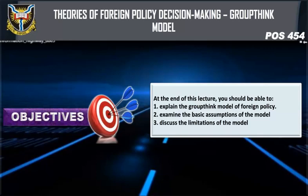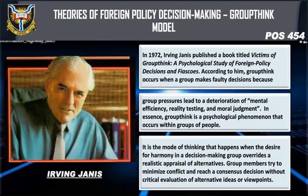In 1972, Irving Janis published a book titled 'Victims of Groupthink: A Psychological Study of Foreign Policy Decisions and Fiascoes.' According to him, groupthink occurs when a group makes faulty decisions because group pressure leads to a deterioration of mental efficiency, reality testing, and moral judgment. In essence, groupthink is a psychological phenomenon that occurs within groups of people.